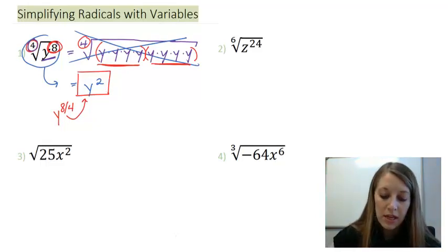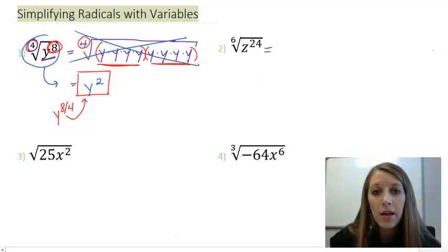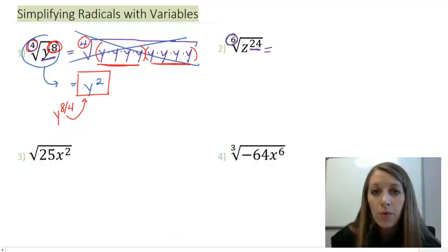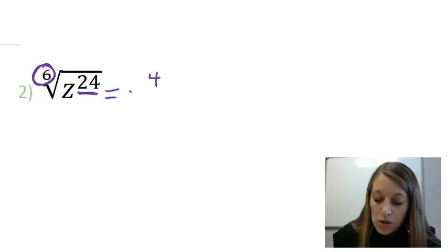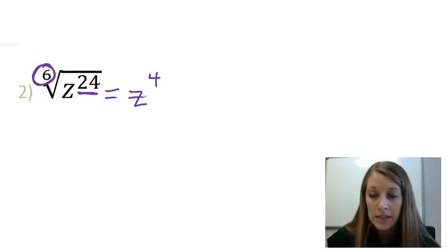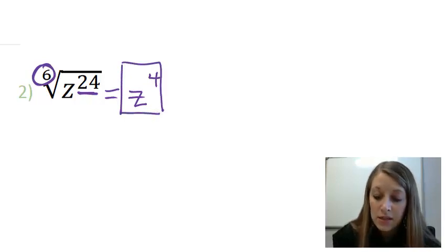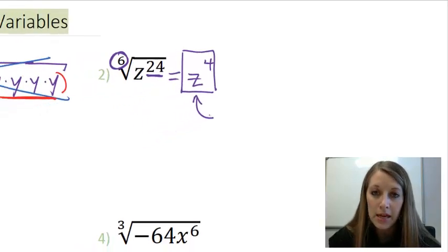So let's move over to example two. Again, I don't want to write out all the details because you would probably get tired of writing out 24 of these z's. Remember, the easiest way is to take your inside power and divide it by your outside root. And that will tell you your final power in the end. So 24 divided by 6 gives you 4. So that tells you your final answer to this is z to the fourth. That means if I would have wrote out 24 of these z's and divided them into groups of 6, I would have 4 groups of them in the end.